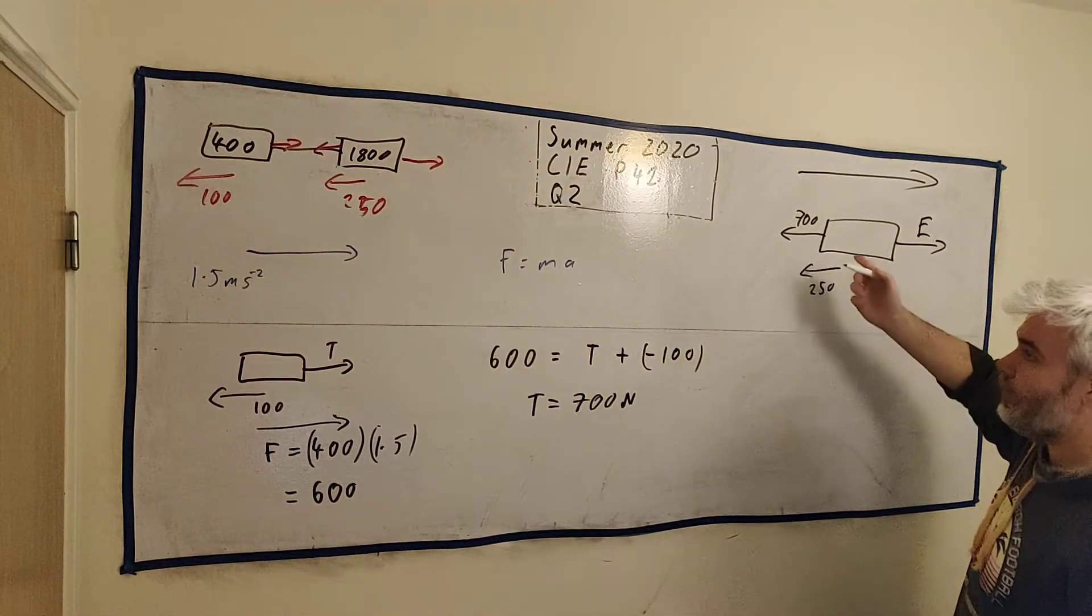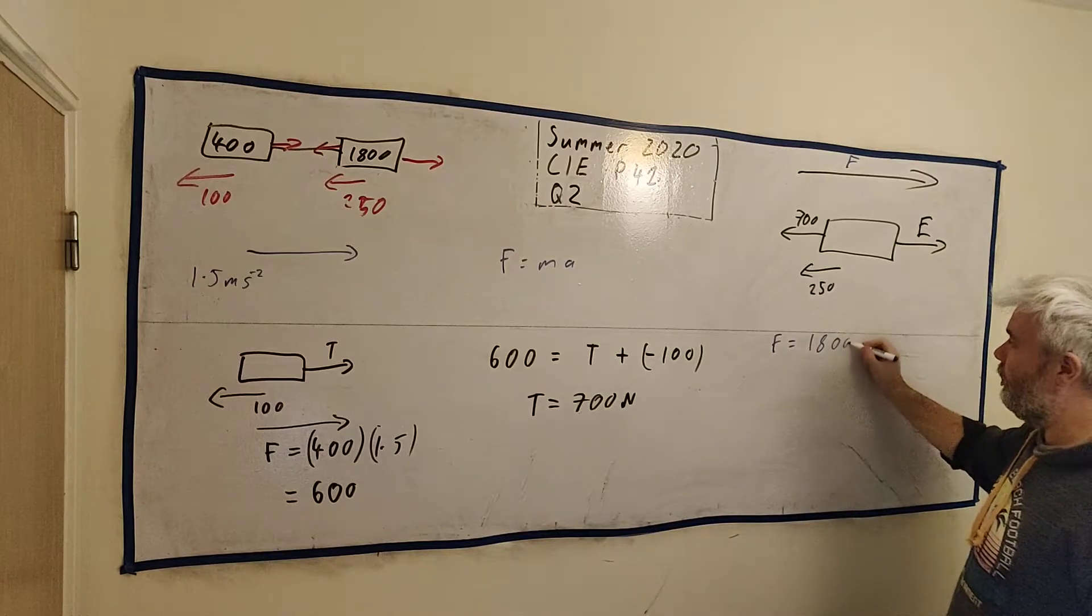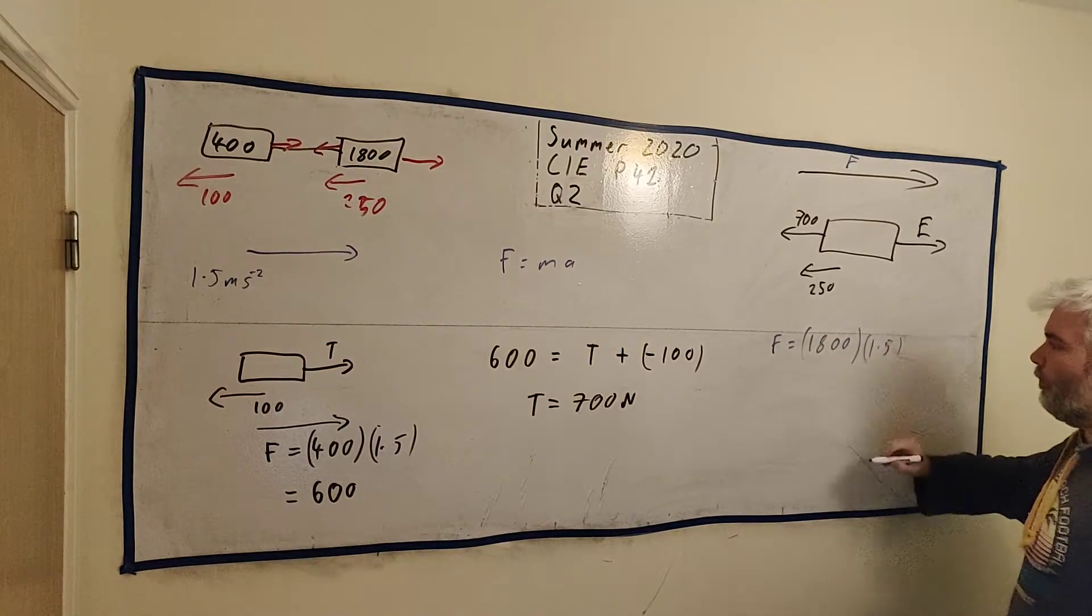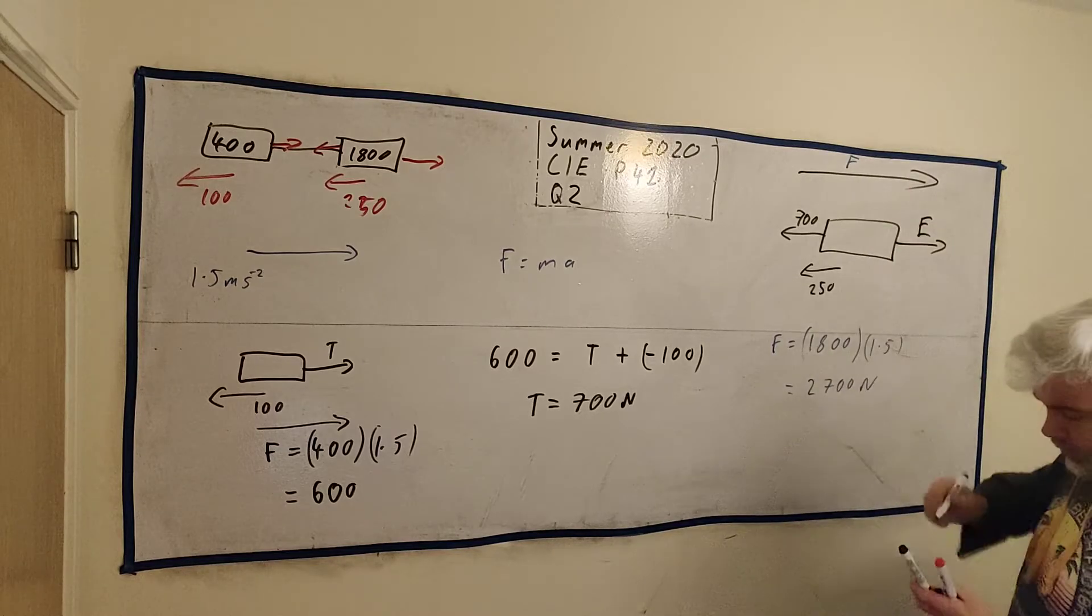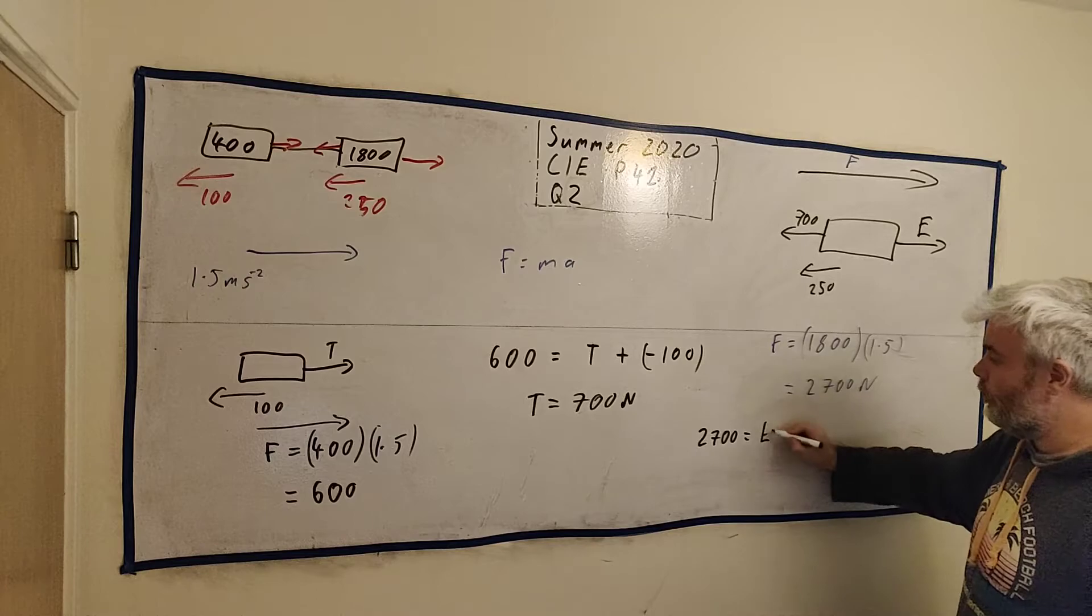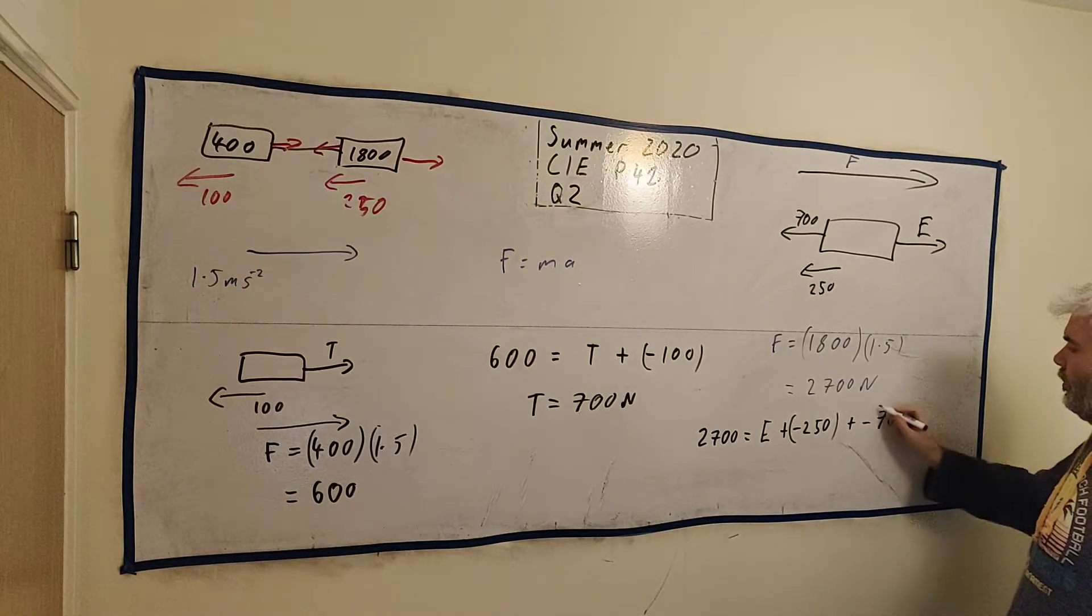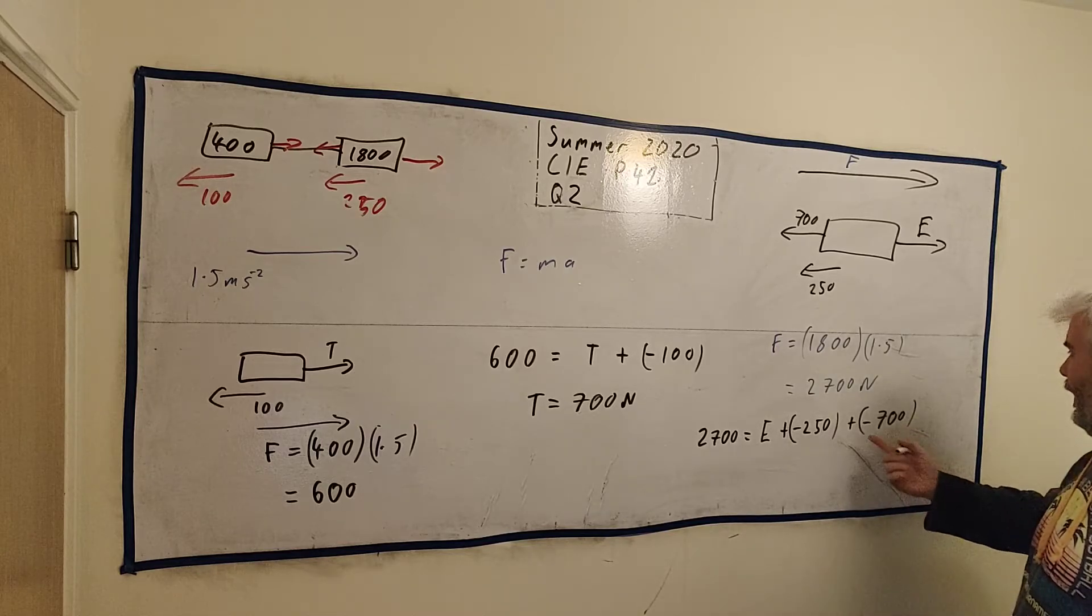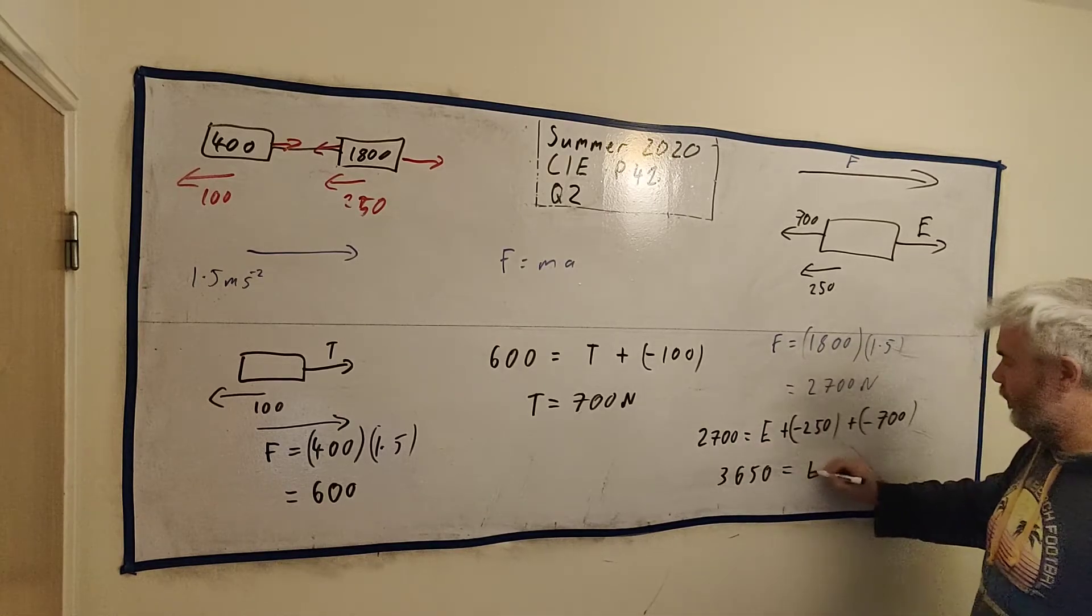And because we also have an overall force happening on this car. And we know that again from F equals MA. The overall force of this car must be, this F must be equal to the car's mass, 1,800 multiplied by the acceleration of the car, 1.5. So this overall force of the system is at 2,700 newtons. All this must add up to 2,700 newtons. So we just write that. 2,700 must equal the engine force plus minus 250 resistance force plus minus 700 from the tension of the tow bar. This is minus 950 becomes a plus over this side. So we get 3,650 is equal to the force from the engine.